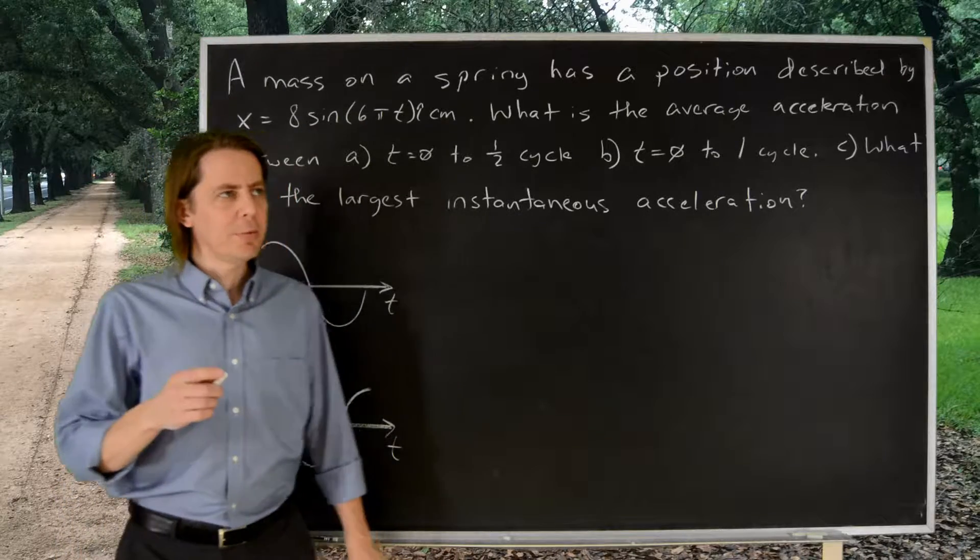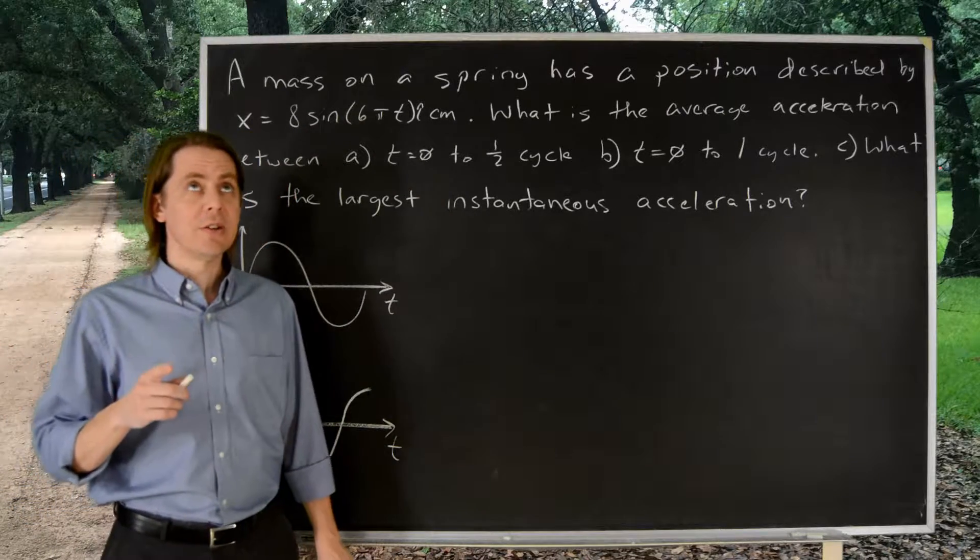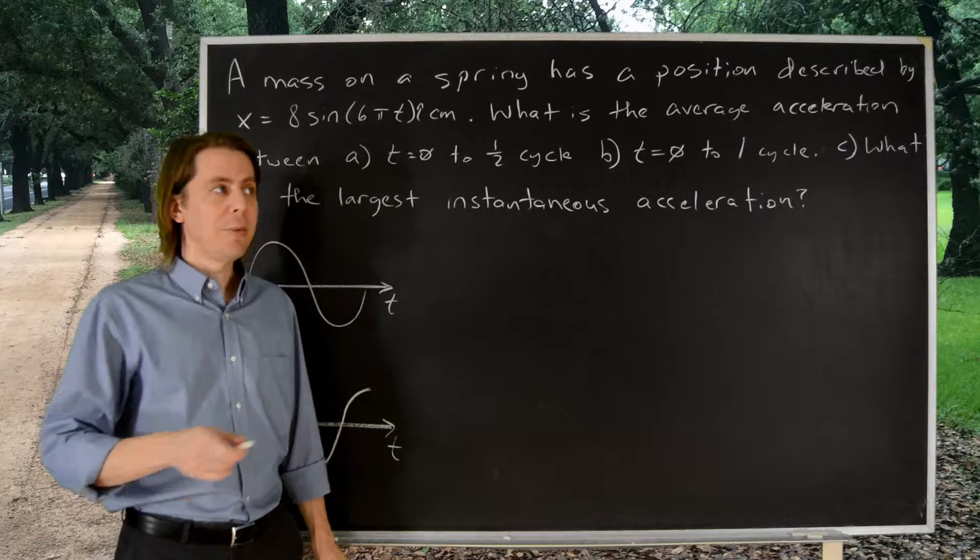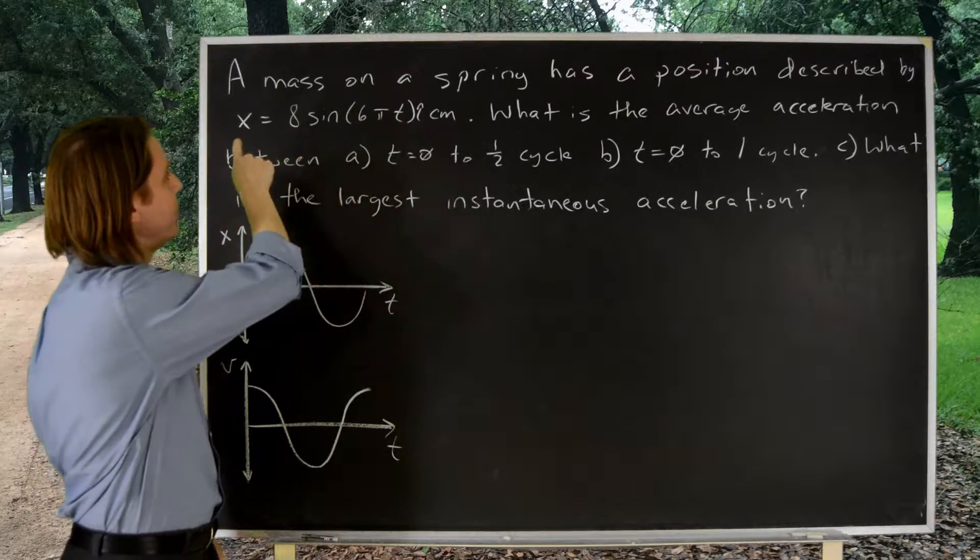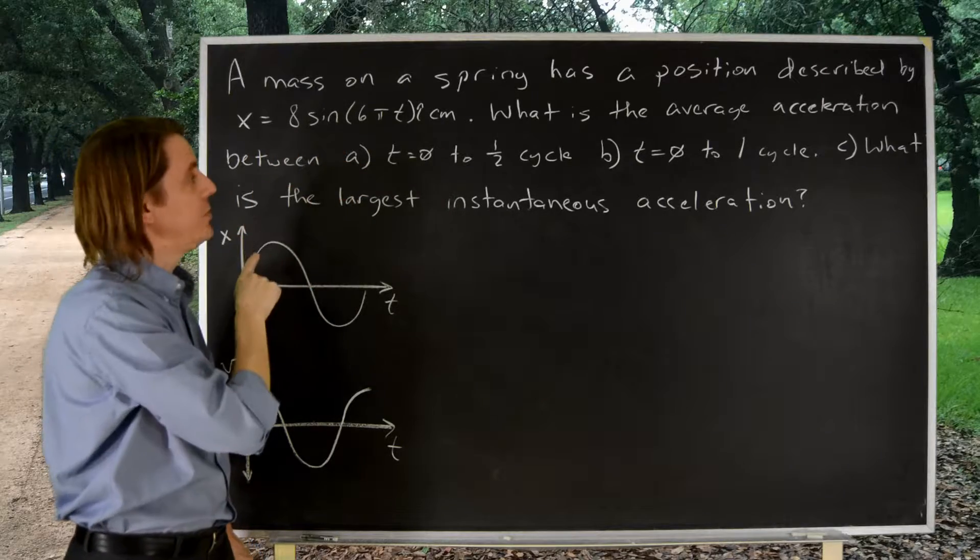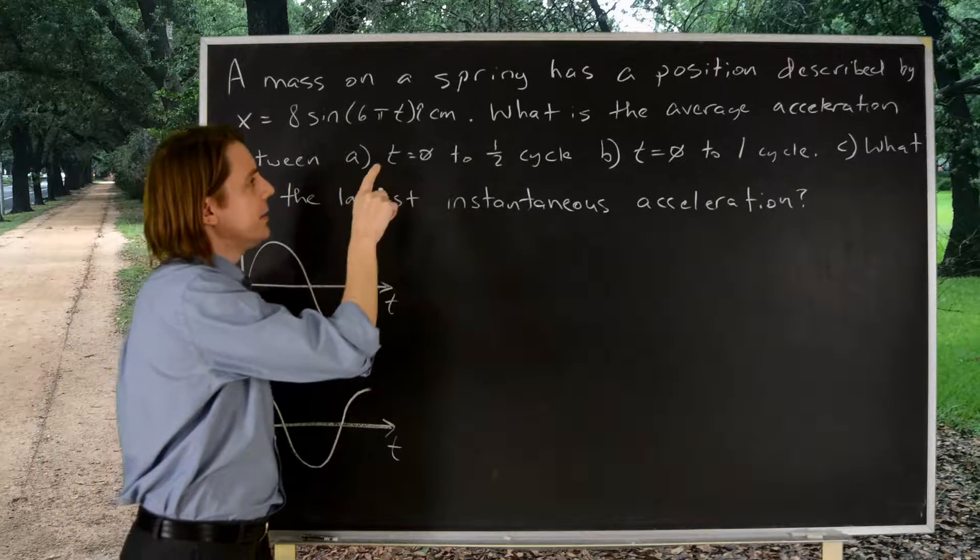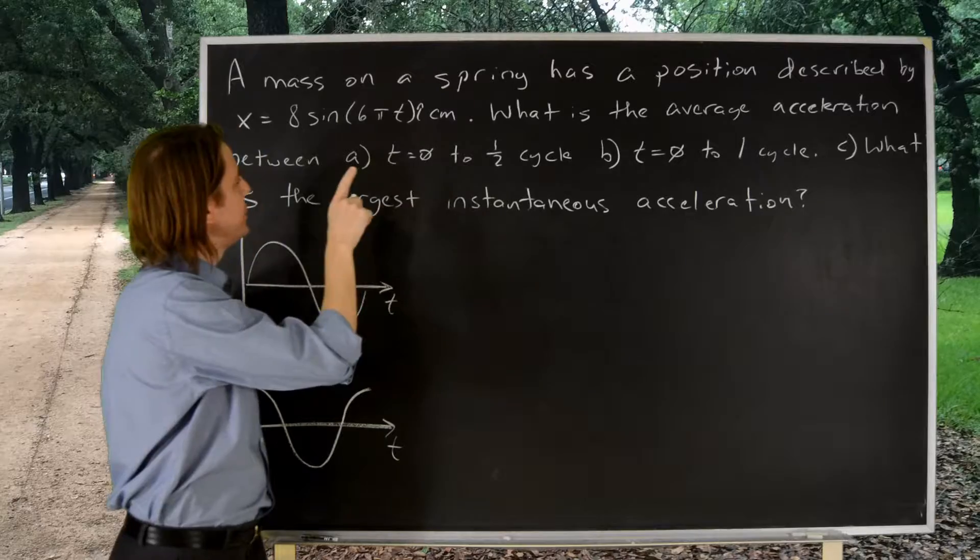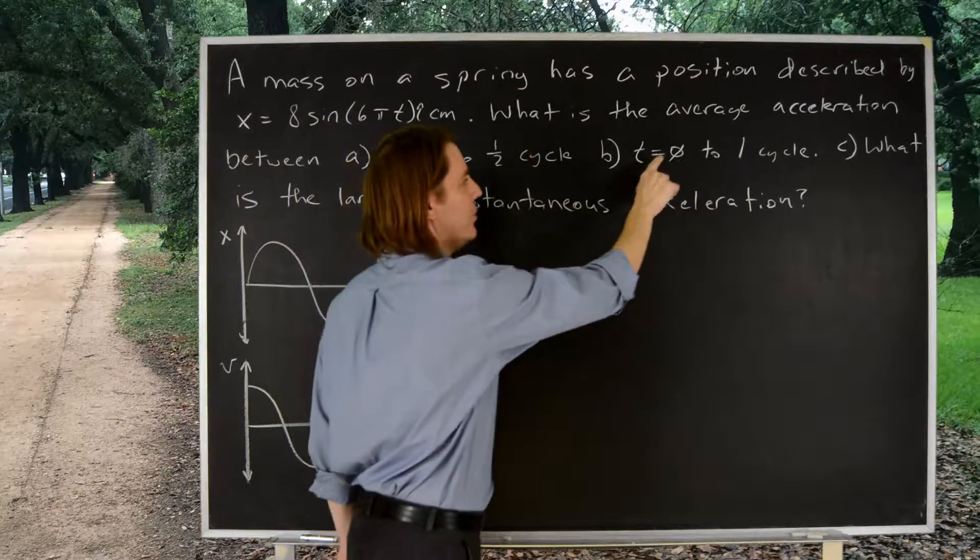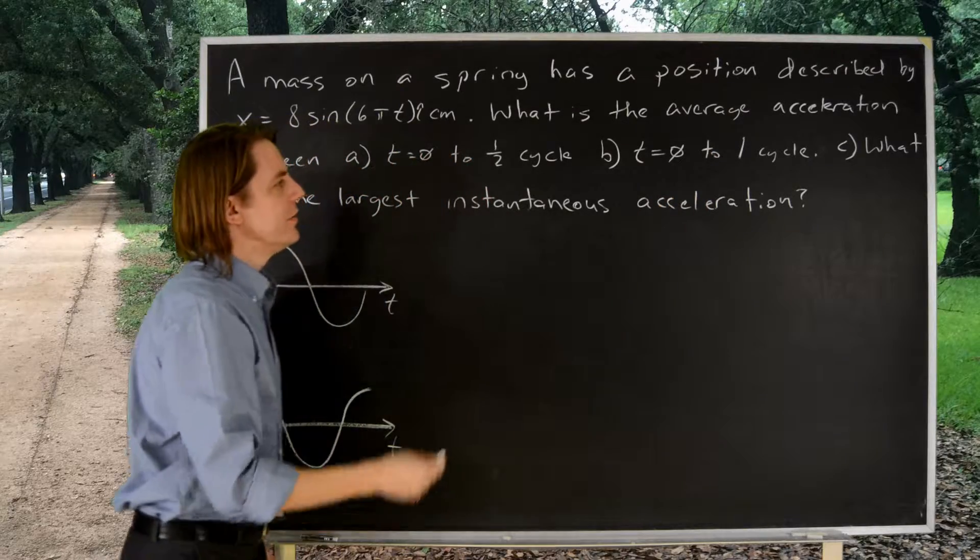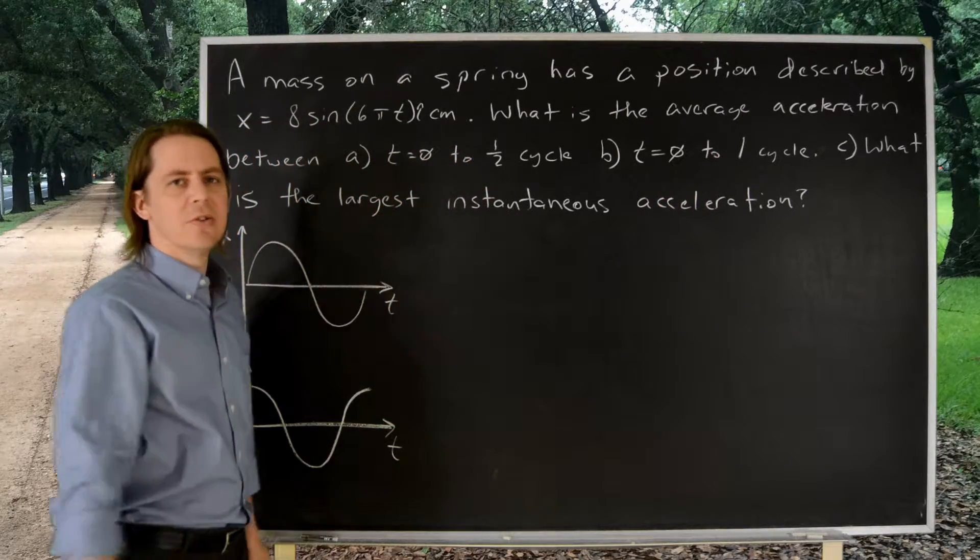To come up with a complicated problem for average and instantaneous acceleration, we go back to the mass on a spring. So, mass on a spring described by this position. This is the same as our previous example. And the question is, what is the average acceleration between t equals 0 and a half cycle, b) between t equals 0 and a whole cycle, and then c) what's the largest instantaneous acceleration?